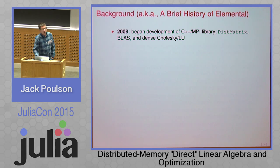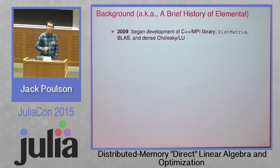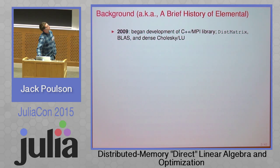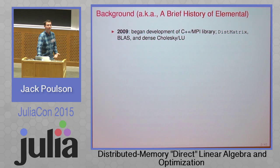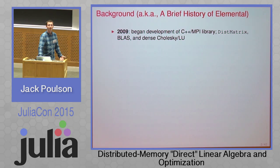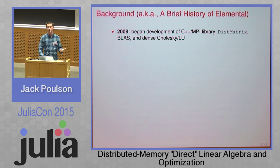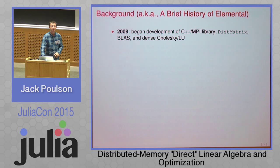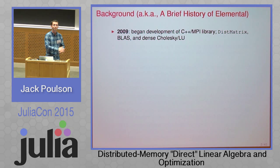As some background, the library I've been developing basically since I started my PhD is called Elemental. It's a C++ and MPI library — back then C++11 didn't exist, but it's since been transitioned nicely. The initial goals were just to support dense BLAS, dense Cholesky, and dense LU. A class called the DistMatrix class was created for this, which has really been the heart of the library. It contains a very large number of different data distributions which can easily be moved between with just an operator-equal in C++, which typically involves some MPI collective behind the scenes.